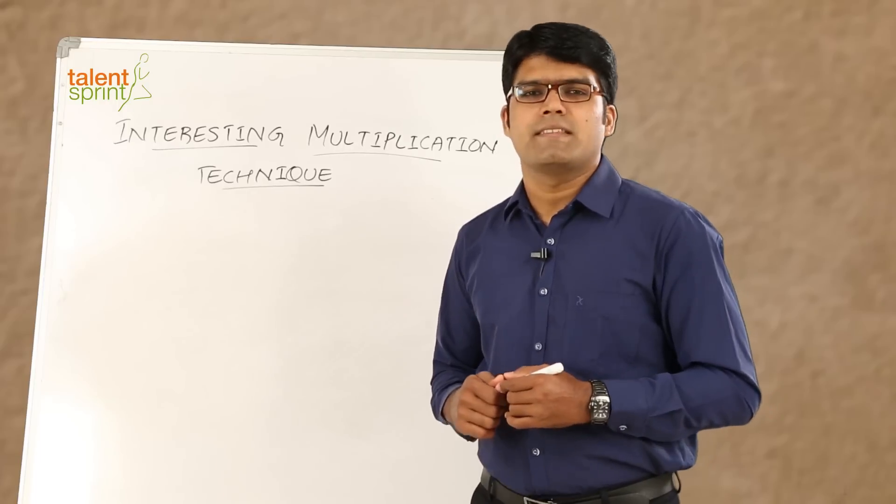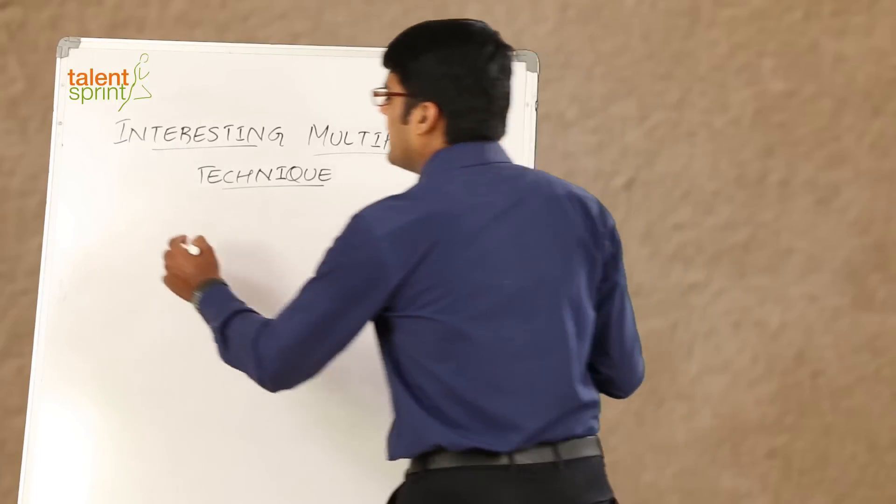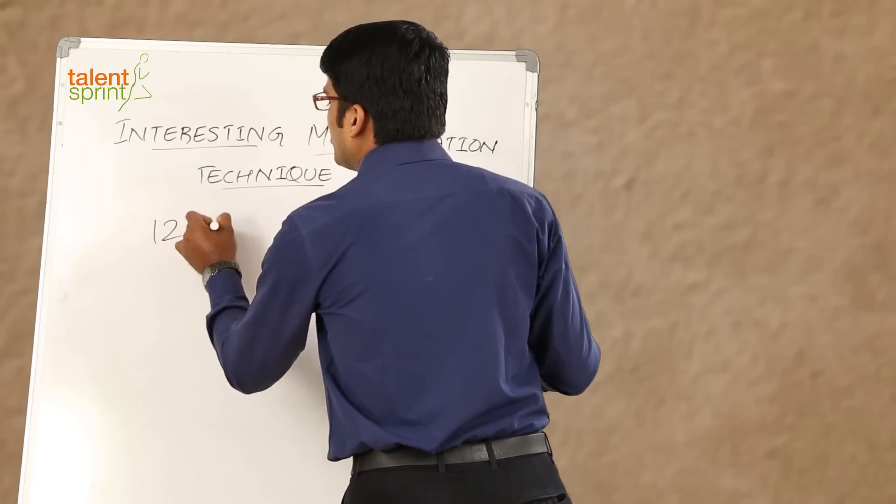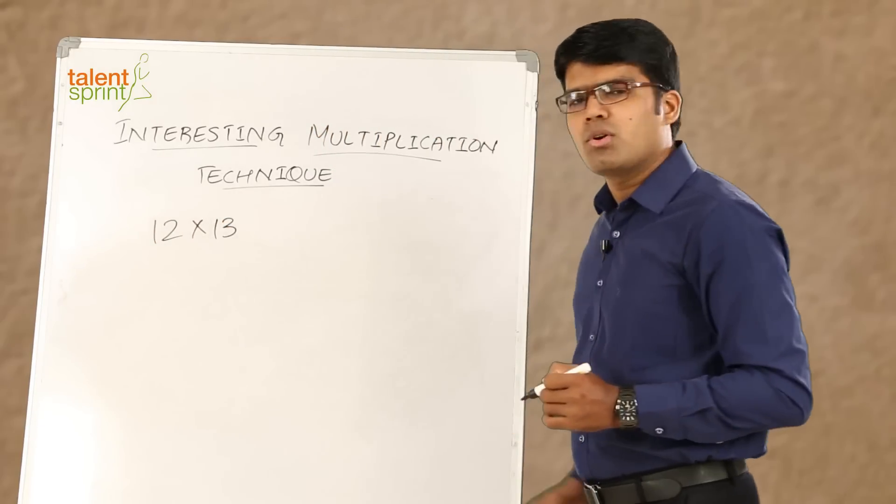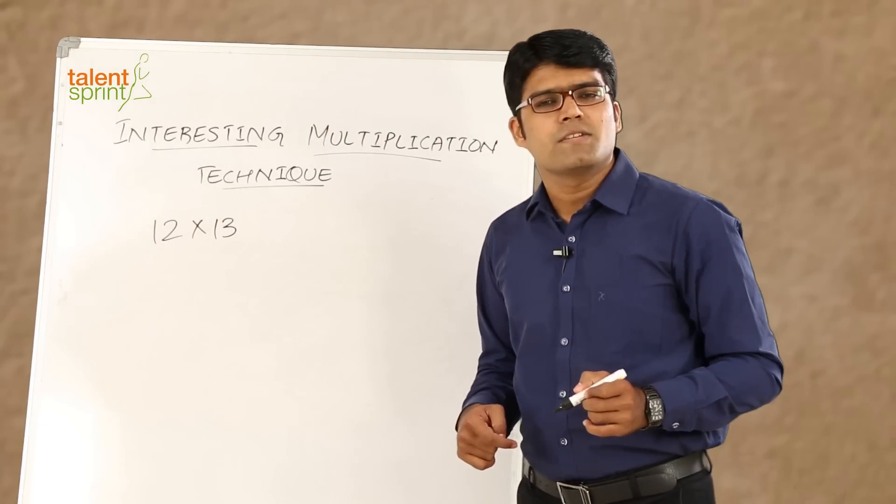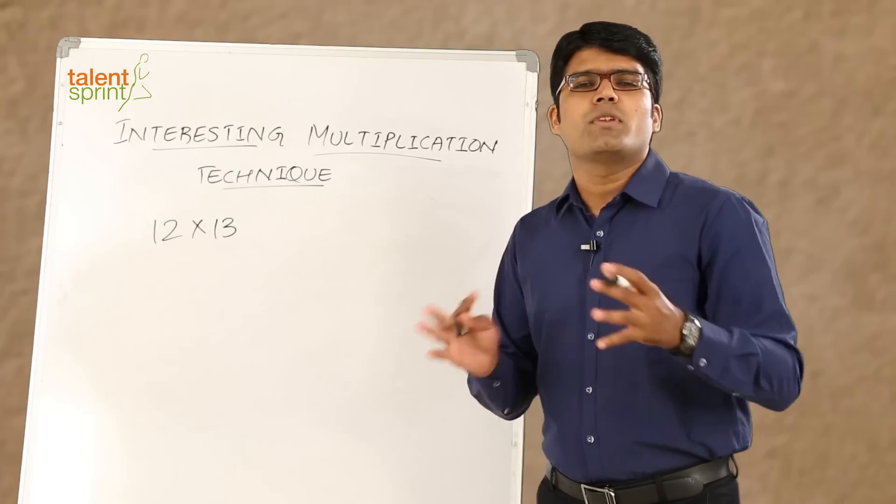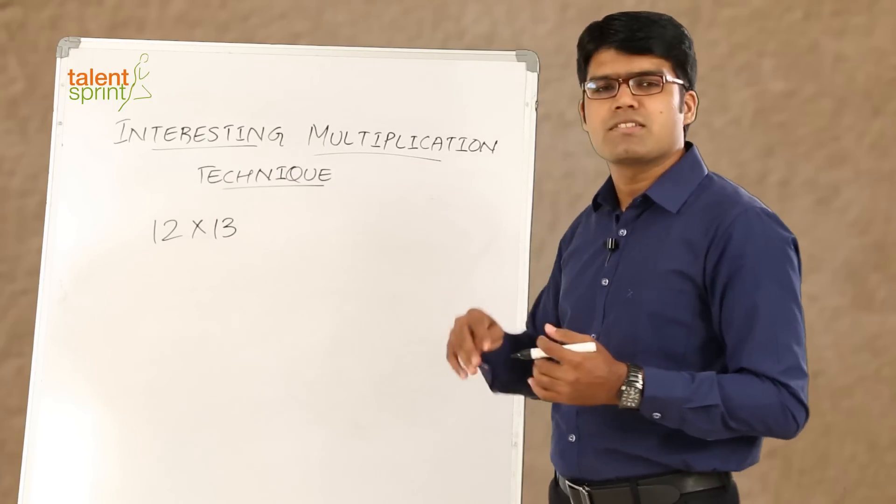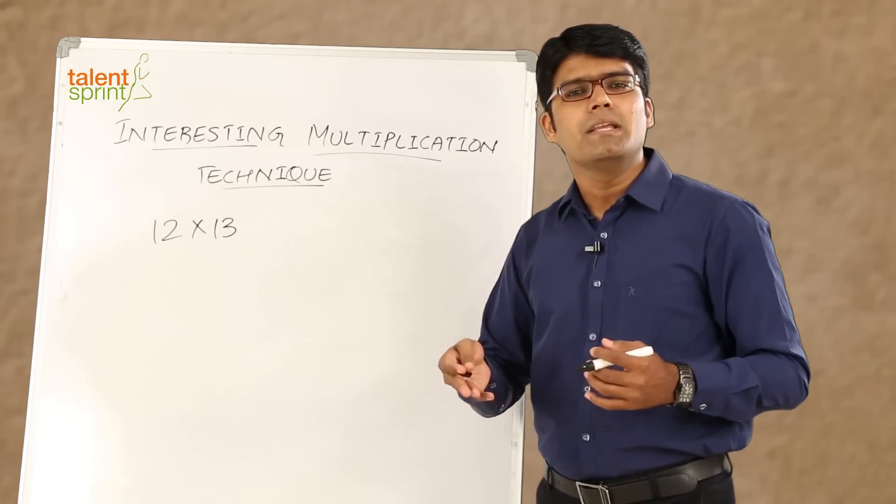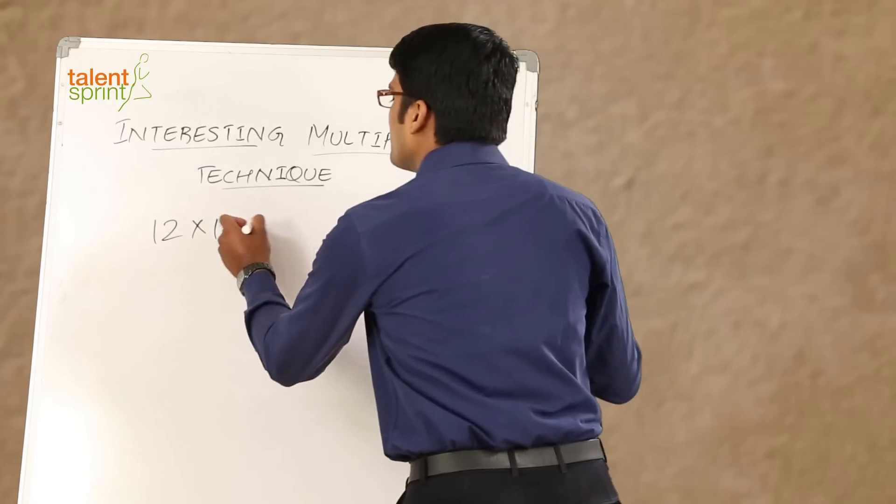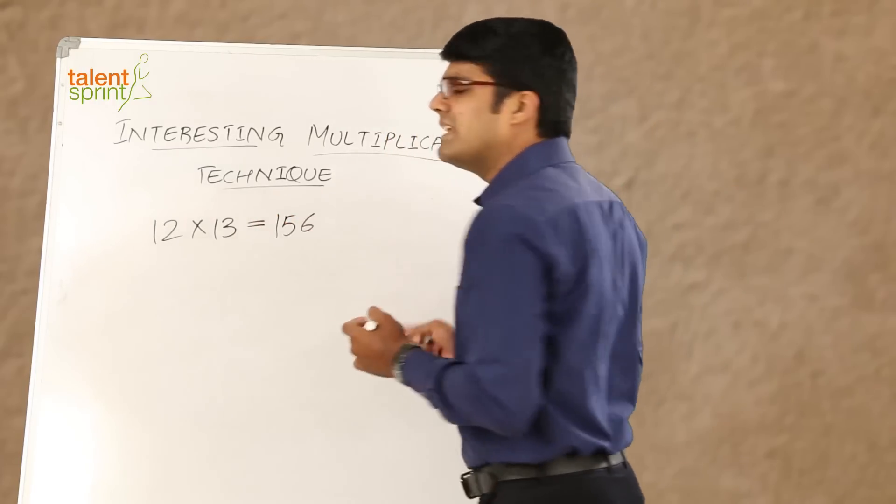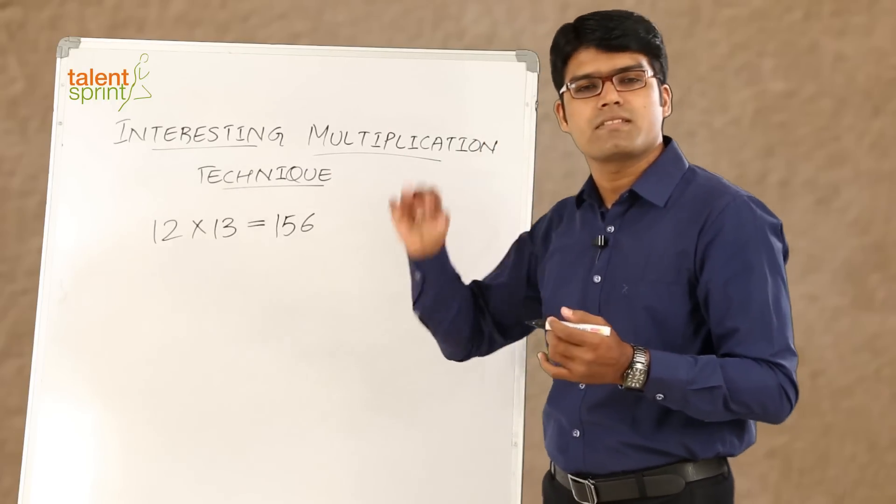So let's take a simple example to understand this. Let's say we have to multiply 12 with 13, right, 12 into 13. Now I'm sure all of you can mark the answer for this question without even having to write anything on paper. You can just do mental calculation and get the answer. 12 into 13 will be 120 plus 36, which is 156. So it doesn't really take any time for us to get the answer for such simple multiplication.